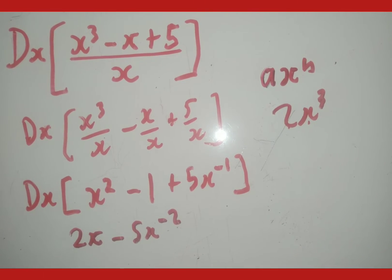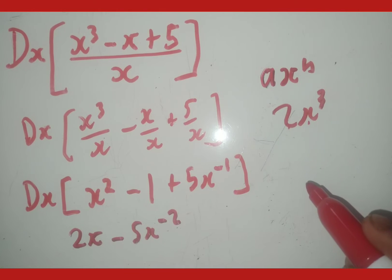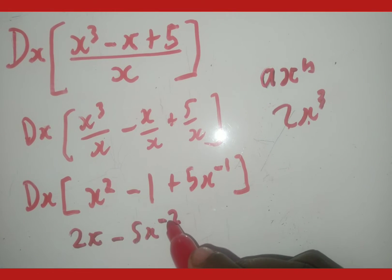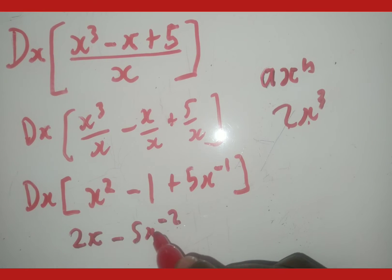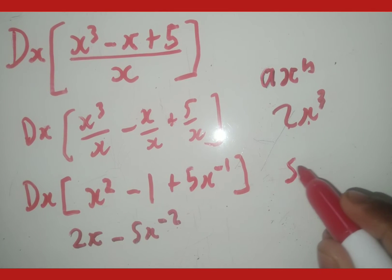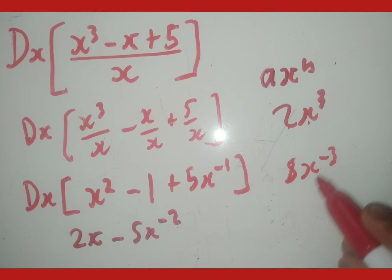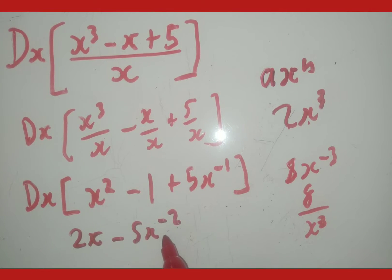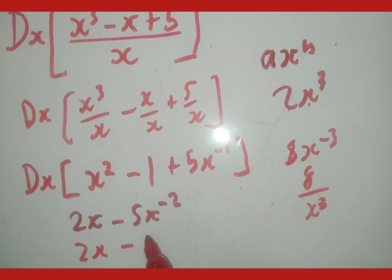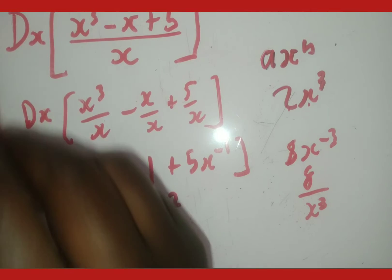If they say leave your answer with positive exponents, we have to change this negative into a positive. Whenever we want to change the sign of an exponent, if something is in the numerator it moves to the denominator. Since 5x to the power of minus 2 is in the numerator, we put it at the denominator and the sign changes. So the final answer is 2x minus 5 over x squared.